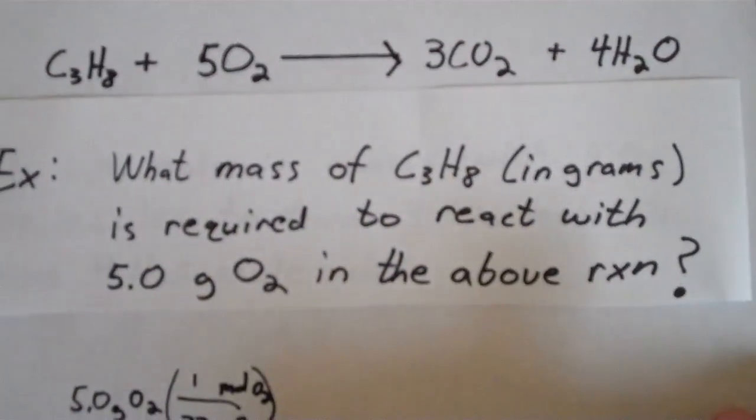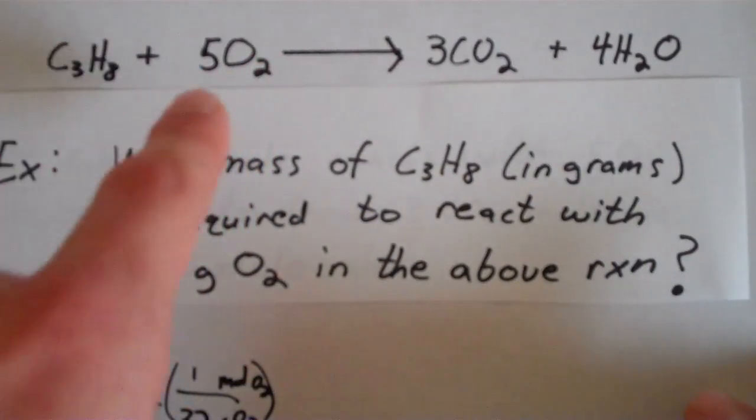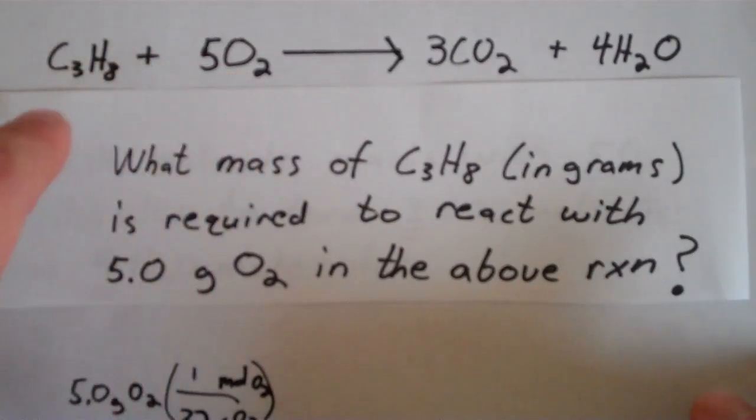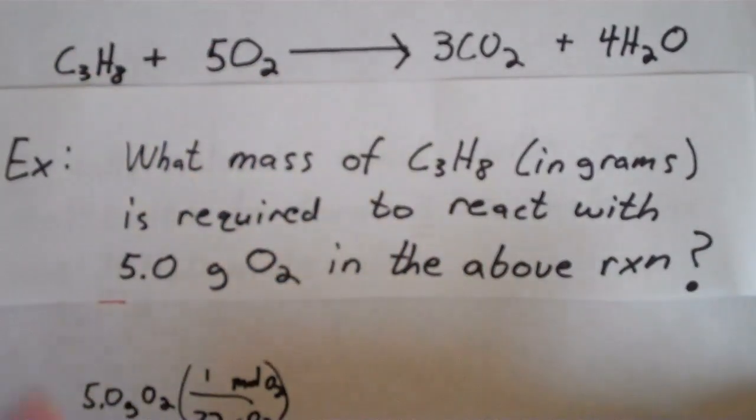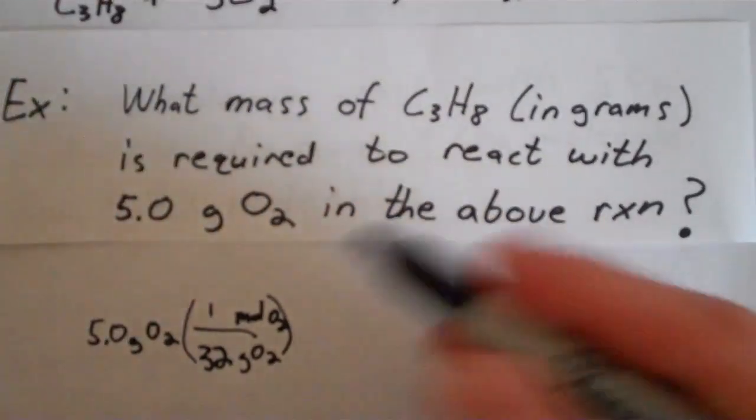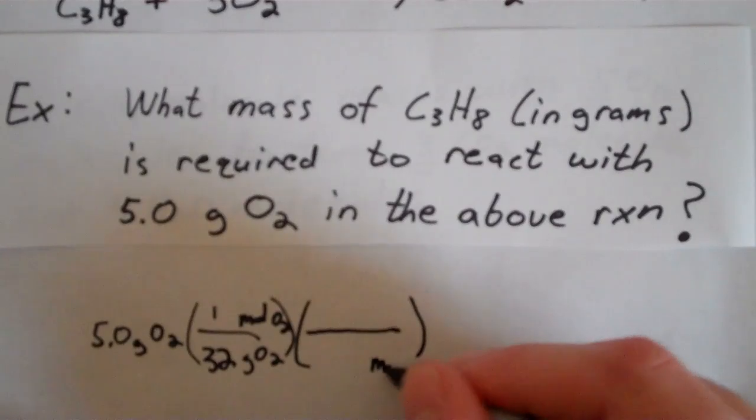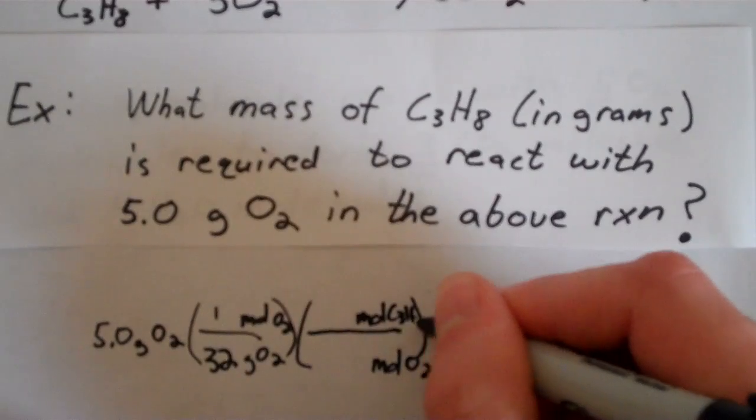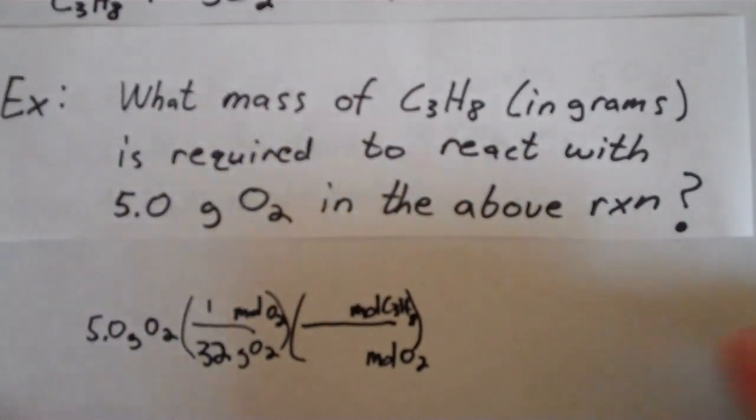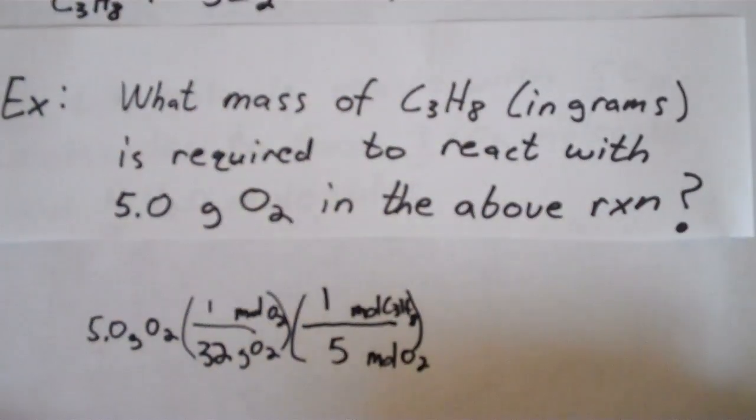Now what we need to do is refer to the balanced chemical equation and find out the molar ratio or the relationship between O2, which is what we're trying to convert away from, and propane, which is what we're trying to convert to. And it looks like we have 5 moles of O2 for every 1 mole of propane. So I'm going to keep that in mind. On the bottom, we'll have moles of O2. And on the top, we'll have moles of propane, C3H8. And it says that there are 5 moles of O2 for every 1 mole of propane.